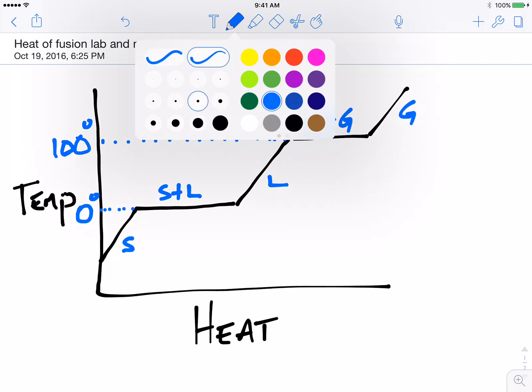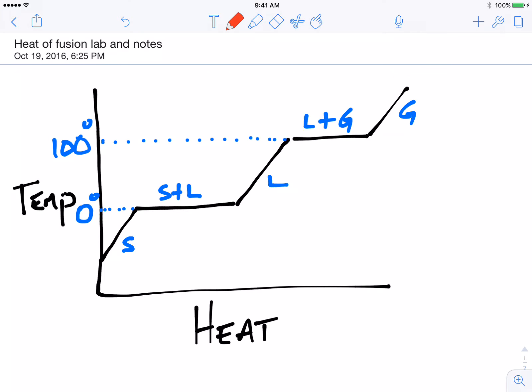Now the heat formula that we've used in the past to be able to calculate heat was Q equals M times C times delta T. Remembering delta T is your change in temperature. So what I want to know is how much energy it takes to be able to melt some ice.